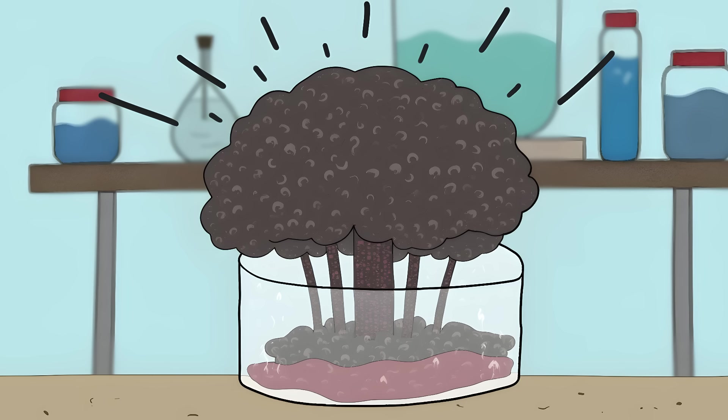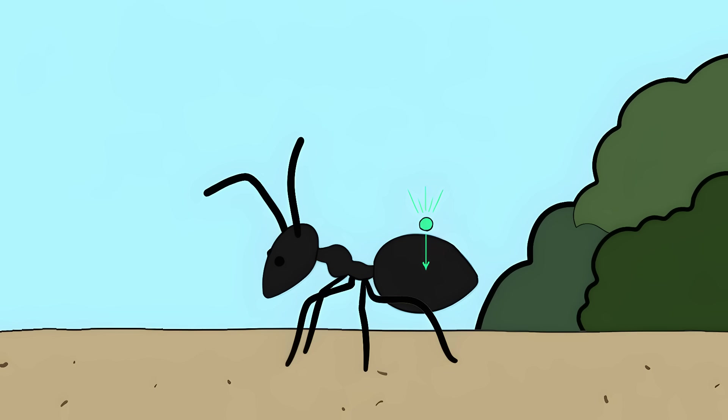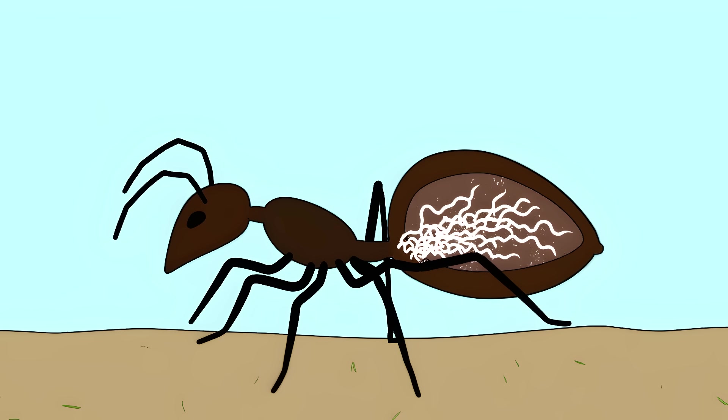Number 2. The Zombie Fungus. There's a fungus in nature that turns ants into actual zombies. When a tiny spore lands on an ant, it drills through the ant's armor like it's got a tiny power tool. Once inside, it starts growing through the ant's body, replacing the ant's tissue with fungal threads.